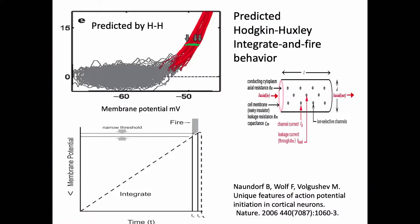Integrate and fire: Hodgkin-Huxley predicted you would have integration with a narrow threshold — when met, there's spiking at a slope because ion channels open sequentially. So you have a narrow temporal and voltage threshold. This is the predicted Hodgkin-Huxley integrate-and-fire behavior.